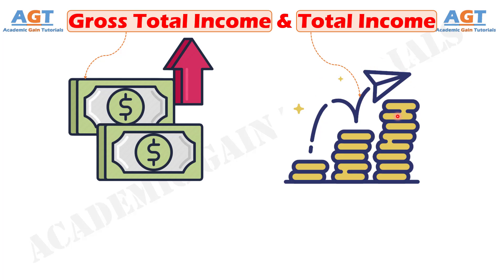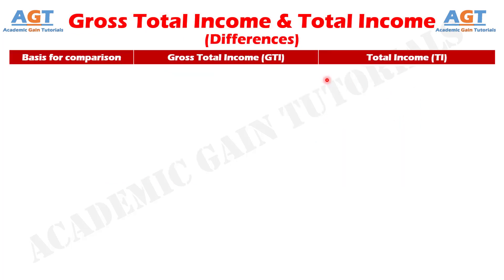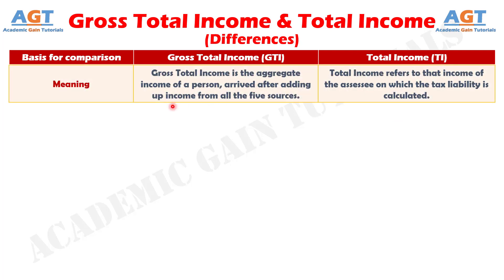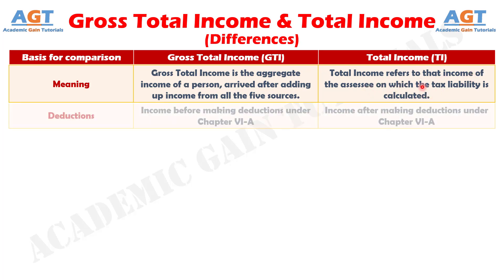So let's look into the basic differences between gross total income and total income in a tabular form. Difference number 1: gross total income means the overall income of the assessee calculated under each head as per the rules of the Income Tax Act and after giving effect to the clubbing provisions and set off of losses. On the other hand, total income refers to the income of the assessee on which tax liability is determined.